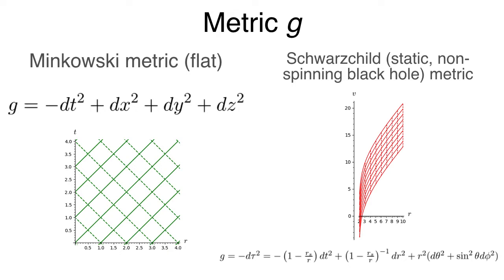One concept I want to introduce from general relativity is a metric — think of it like a ruler measuring distances in space and time. Usually this ruler doesn't change in time and space, so we say space-time is flat and its curvature is zero. For a black hole, that changes. The metric depends on how close you are to the black hole, and space-time gets more and more curved as you approach the center. The curvature is not zero but positive, since the black hole is spherically symmetric.